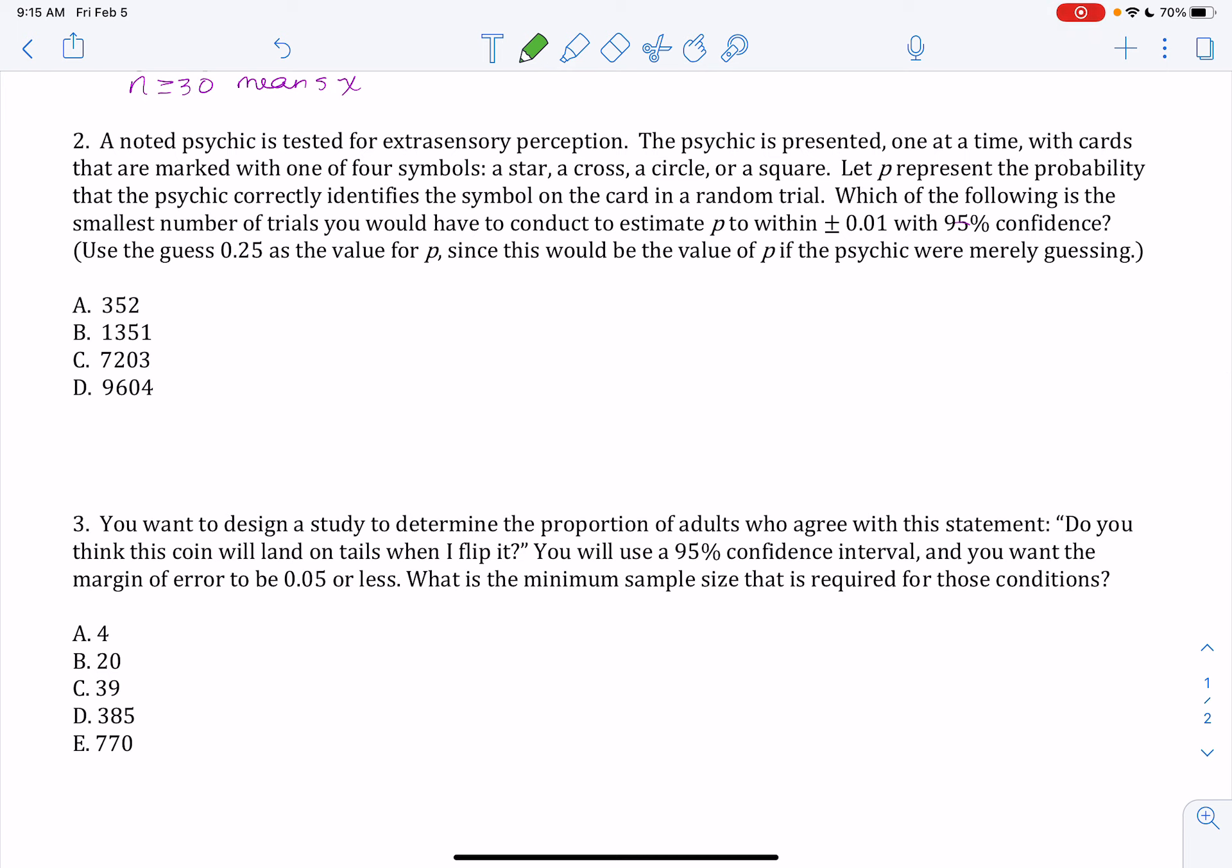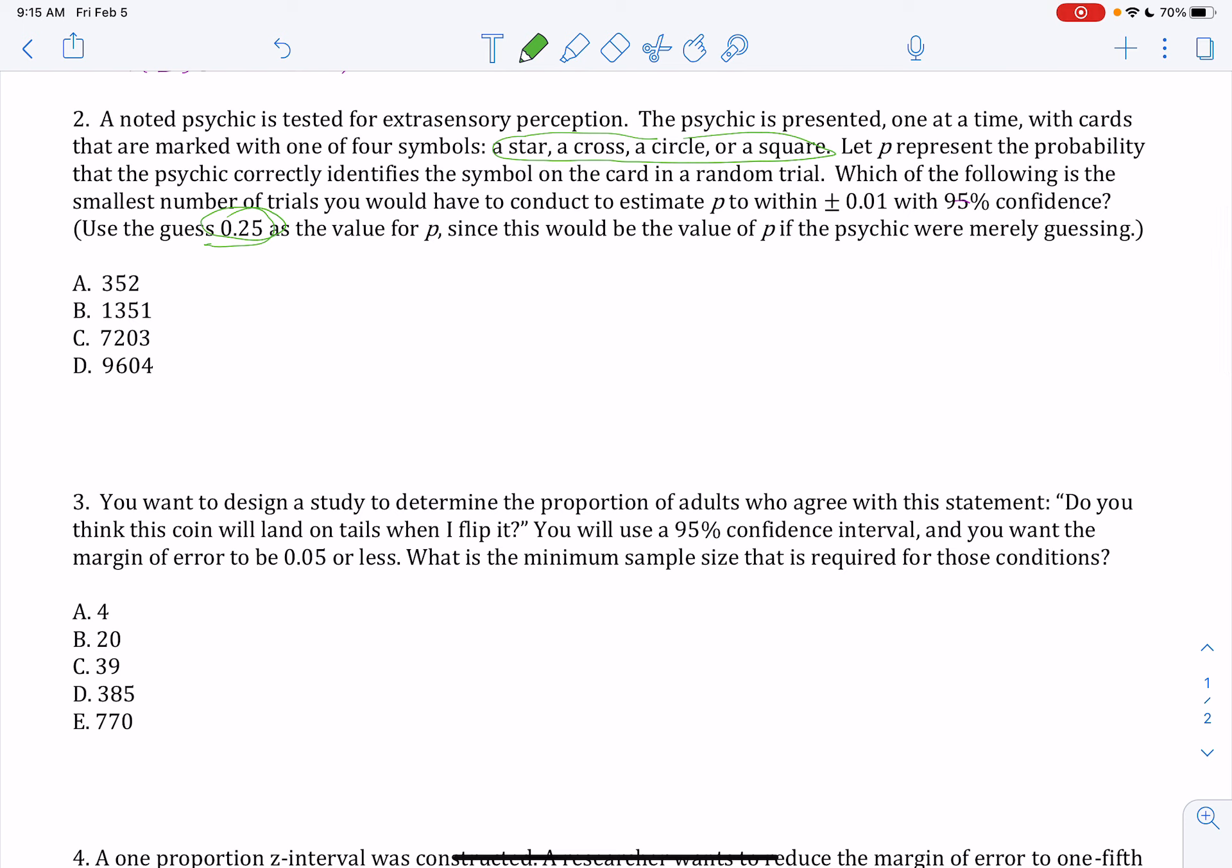In number 2, a noted psychic is tested for extrasensory perception, is presented with these cards with four different symbols. If they were guessing, they'd get it correct 25% of the time. Which of the following is the smallest number of trials you'd have to conduct to estimate p within 1% of 95% confidence? So we would want to do a margin of error. The margin of error is everything that comes after the plus or minus in our confidence interval. So the Z star times the standard error, that whole value needs to be less than or equal to this 1%, 0.01.